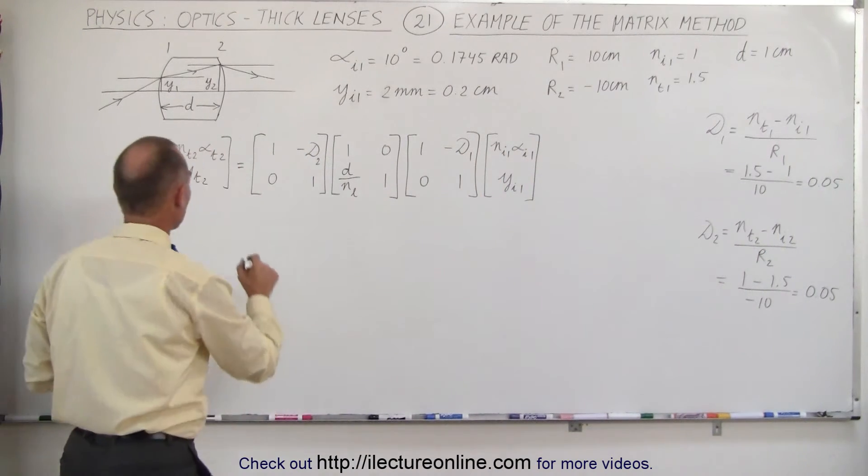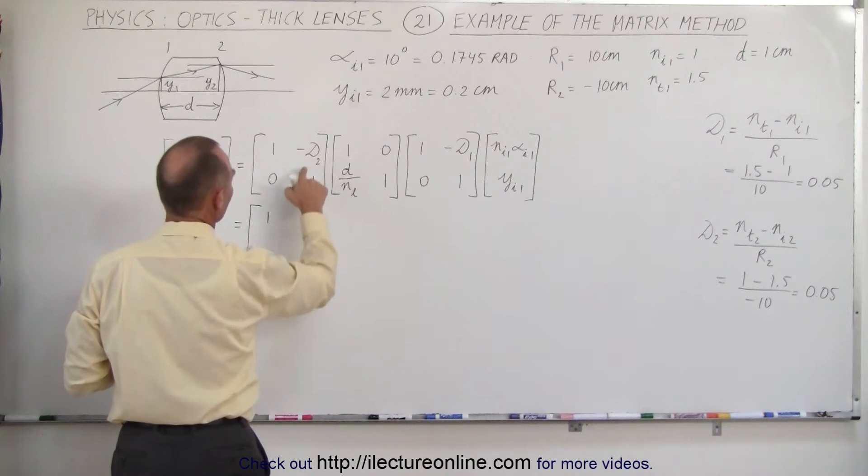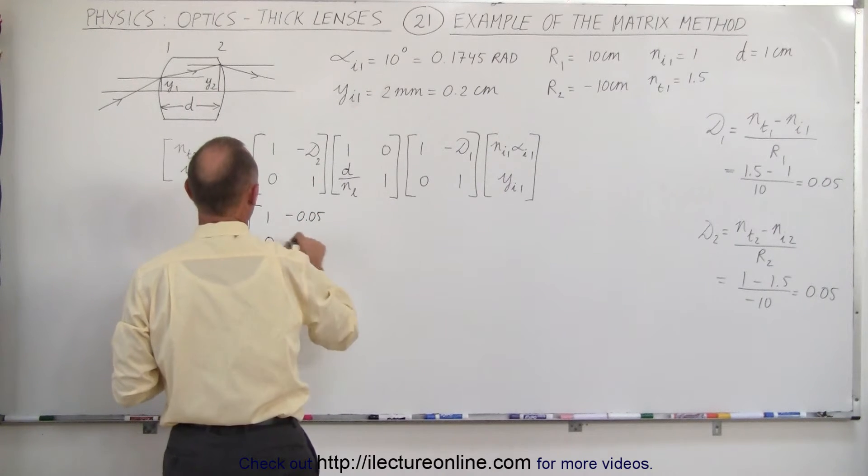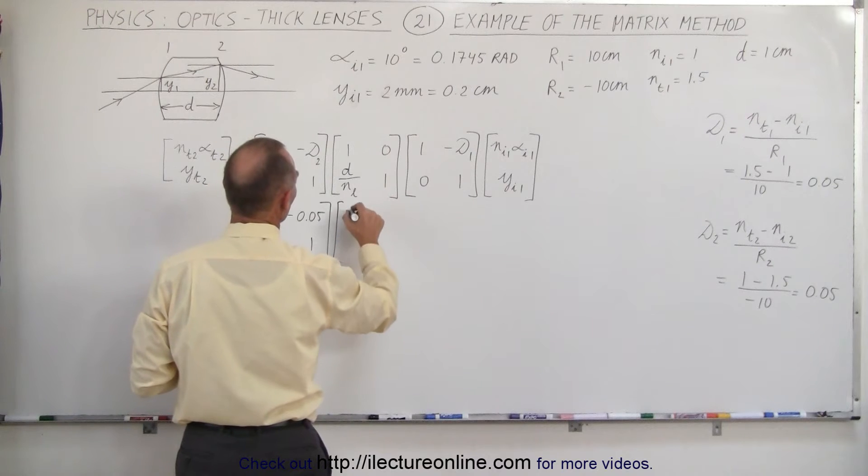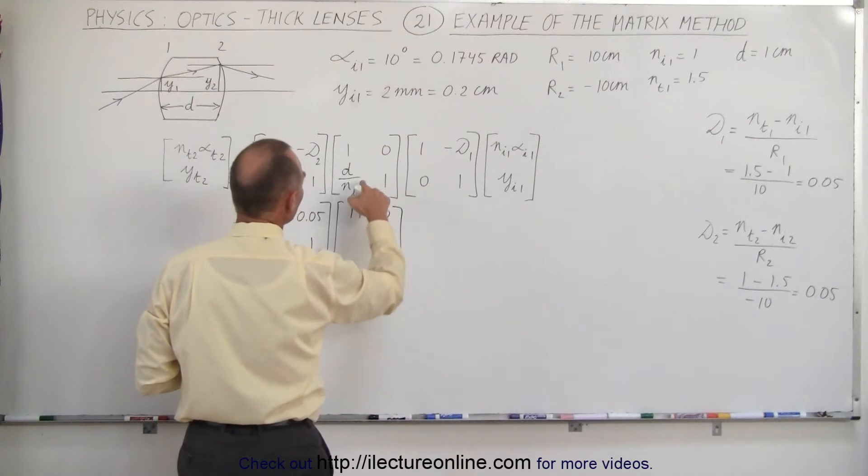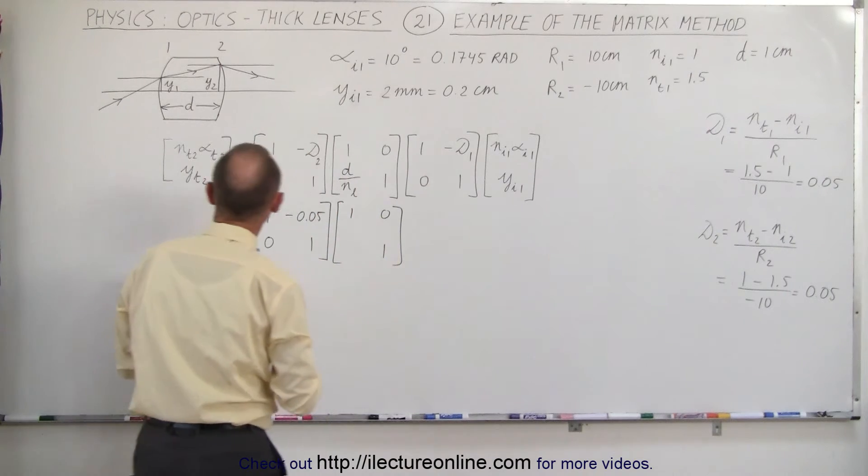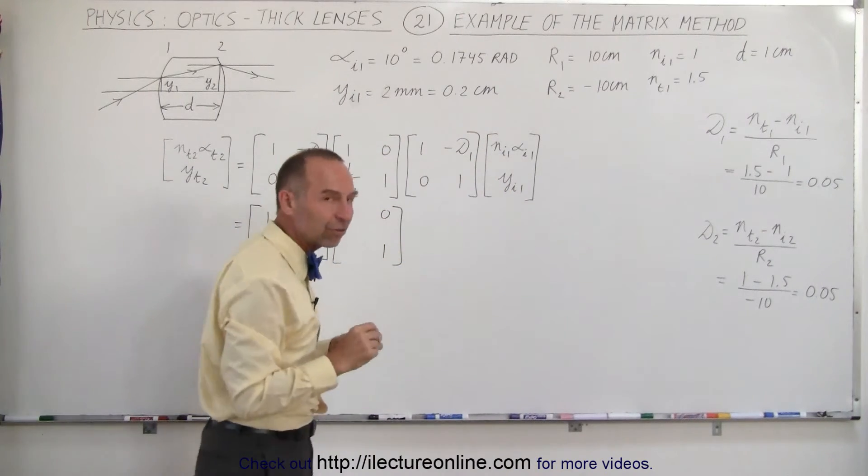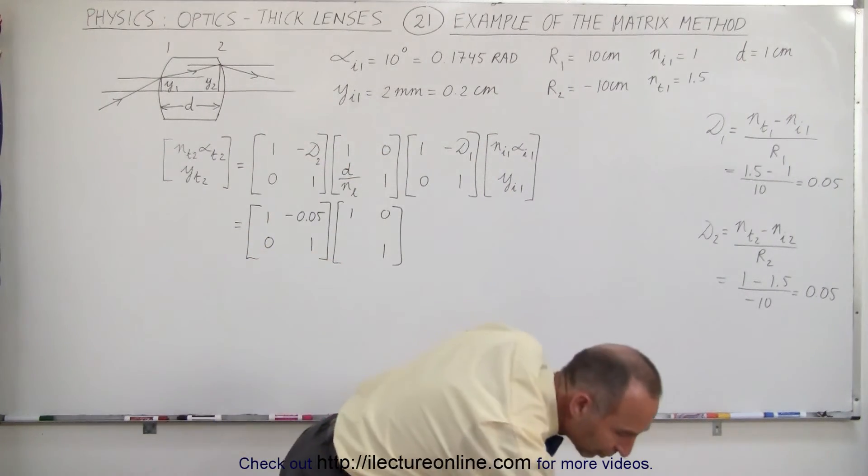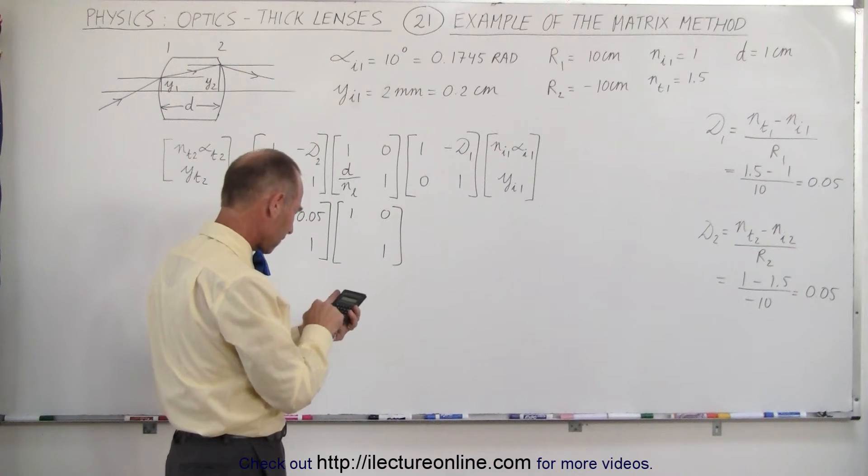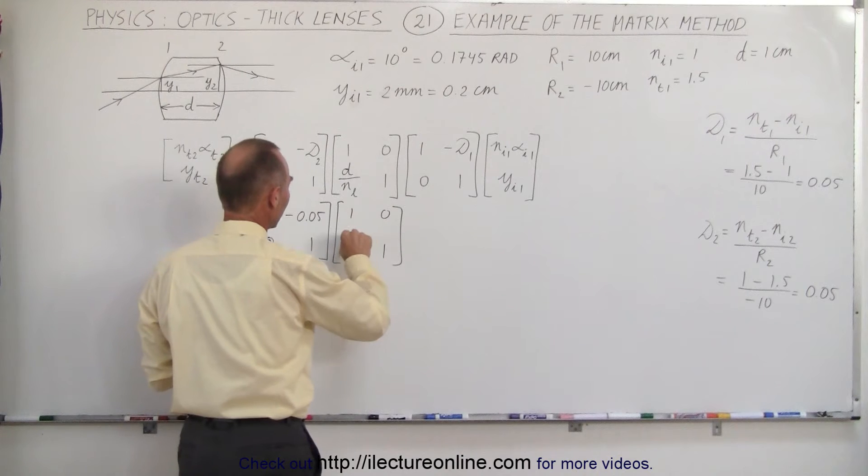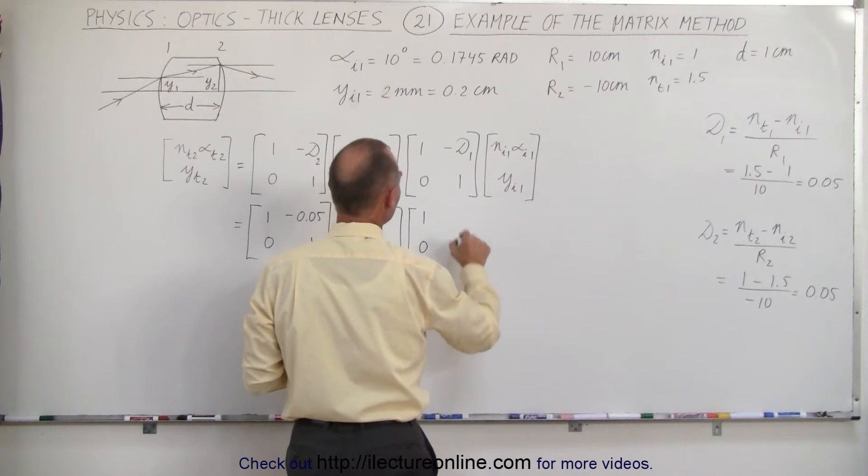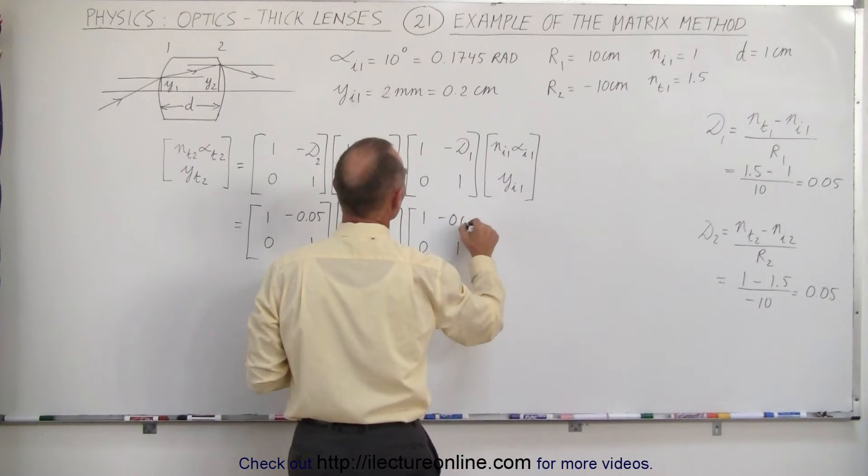So this is equal to 1, minus D2 that would be minus 0.05, 0 and 1. Here we get 1, 0, 1. Now we need D divided by N sub L. D is the thickness of the lens, which was 1cm, so that would be 1 divided by the index of refraction of the lens, which is 1.5. So 1 divided by 1.5 is 2 thirds, so we just put 2 thirds down. Here we write down 1, 0, 1, minus D1 would be minus 0.05.